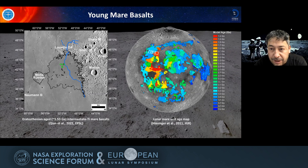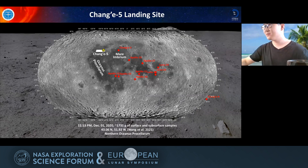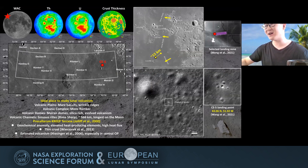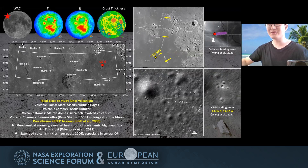Do you expect any fragments of highly silicic material in Chang'e-5 samples? I think it is possible that there are some silicic compositions in the Chang'e-5 samples, because near the landing site there are four mare domes that are silicic-rich and very close to the landing site. Small impacts on these domes can definitely deliver some materials to nearby distances, which may have been sampled by Chang'e-5.